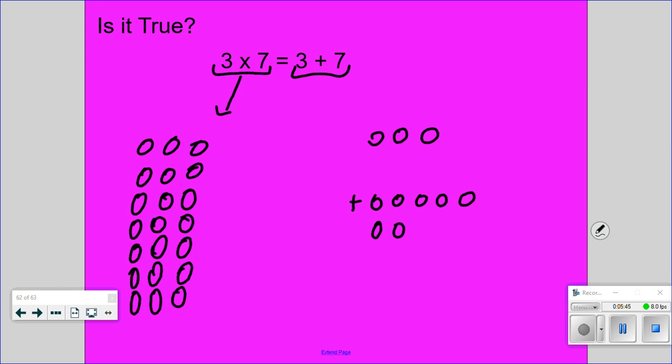So looking at those dots and what you know about addition and multiplication, is that true? No. No, that is not true. 3 times 7 does not equal 3 plus 7. Even though they have the same numbers, that does not equal the same amount.